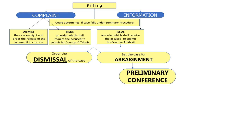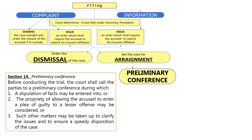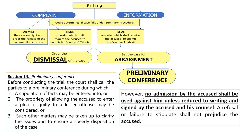After arraignment, there will be a preliminary conference. That is very clear according to Section 14: before conducting the trial, the court shall call the parties to a preliminary conference. What happens at the preliminary conference? The parties discuss stipulation of facts, the propriety of allowing the accused to enter a plea of guilty to a lesser offense, and other matters to clarify the issues and ensure speedy disposition. But since this is a criminal case, no admission by the accused shall be used against him unless that admission is reduced to writing and signed by the accused and his counsel. If the accused refuses or fails to stipulate, that will not prejudice the accused.